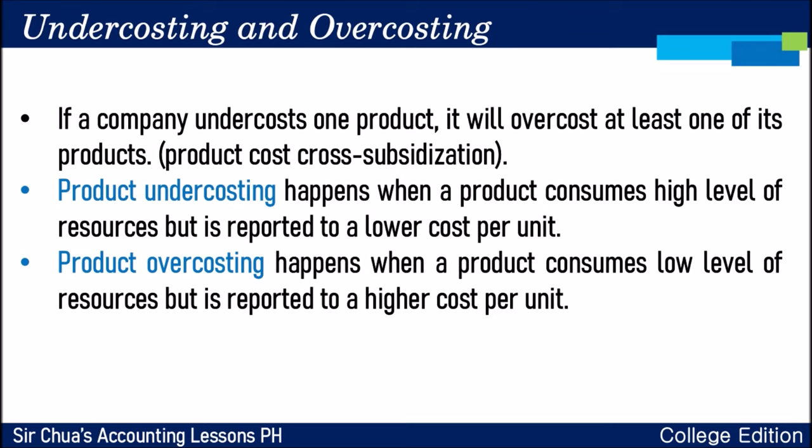When using a single plant-wide predetermined overhead rate, we can encounter product cost cross-subsidization. There may be a product that is under-costed — its cost is lower than expected — and because something is under-costed, there must be a product that is over-costed. Product under-costing happens when a product consumes a high level of resources but is reported at a much lower cost than expected. Over-costing happens when a product consumes a low level of resources but is reported at a higher cost than expected.